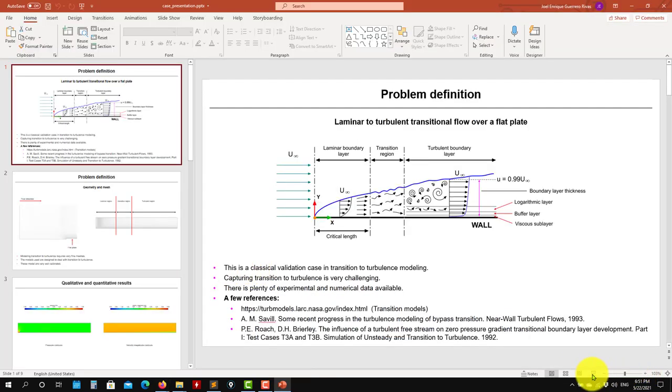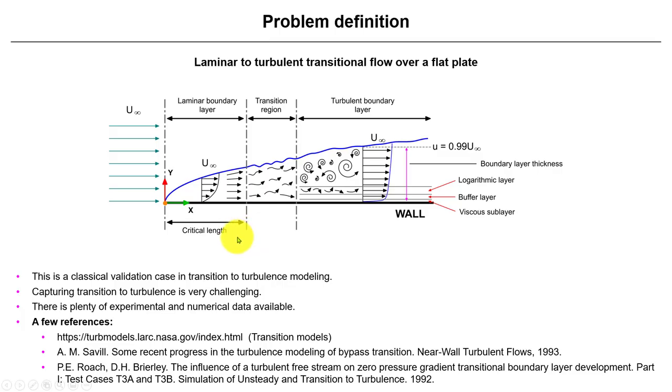This is a traditional flat plate, but now we're going to consider transition to turbulence. We're not going to assume that we have the onset of turbulence immediately when the flow reaches the edge of the flat plate. We're going to see the critical length.